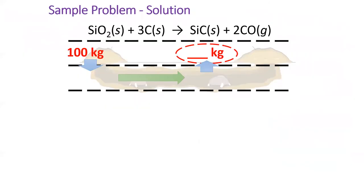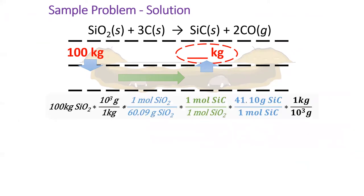The solution to this problem requires some extra conversion factors, since our starting units are in kilograms. Notice that I convert from kilograms to grams in black before applying the molar mass in blue. I have to convert back to kilograms at the end because the problem gives the actual yield in kilograms.